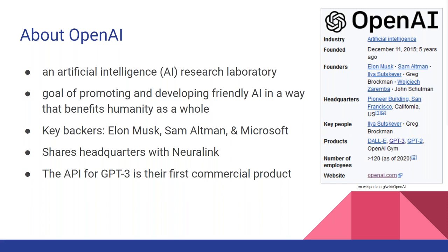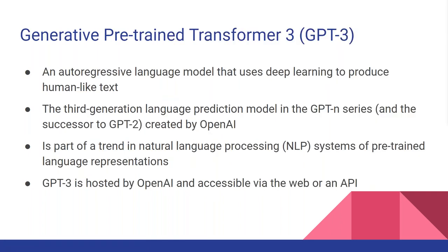OpenAI is a combination of a non-profit as well as a for-profit company. GPT-3 is their third version of GPT and their first commercial product. It is currently in beta — you can sign up for the beta to get beta access. There's a waiting list, and you get some free credits to start with, but it is a paid model to use.